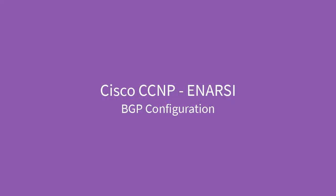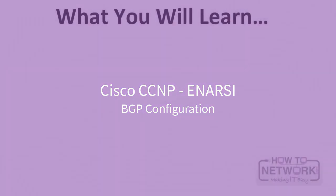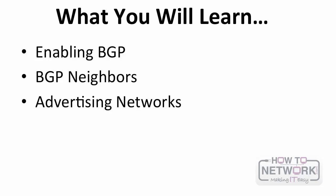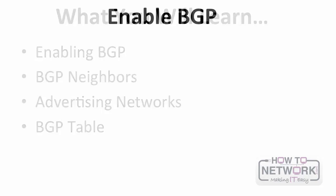Hi, this is David Voss, CCIE 11372, and in this video we're going to be going over BGP configuration. Here's specifically what you're going to learn: how to enable BGP on a router, how to bring up BGP neighbor relationships, advertising networks to those neighbors, and taking a look at the BGP table itself, as well as some best practices on implementing BGP in your environment or to answer the appropriate test questions.